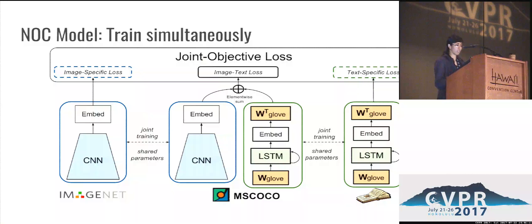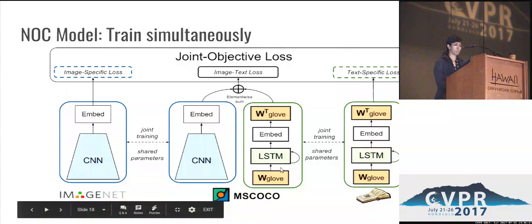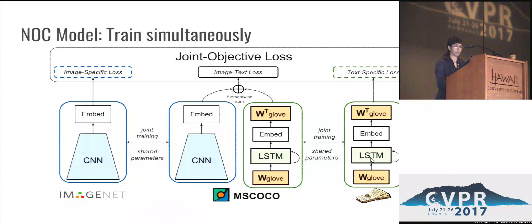All three networks are combined and trained jointly with shared parameters. More specifically, in each batch of inputs during training, we have some images with labels, a different set of images and captions, and some plain sentences. All three networks are trained simultaneously with the shared parameters.